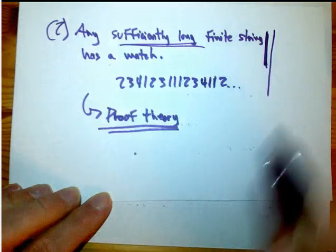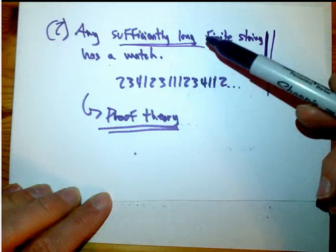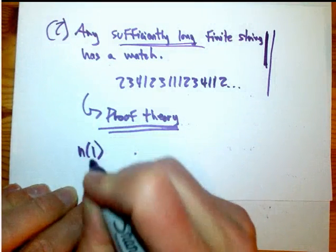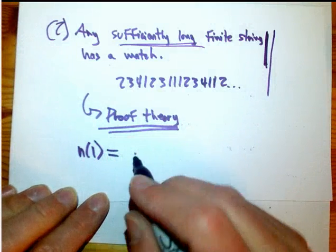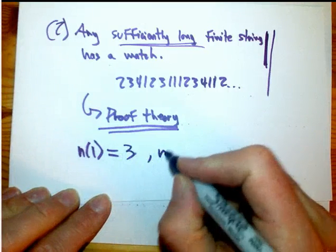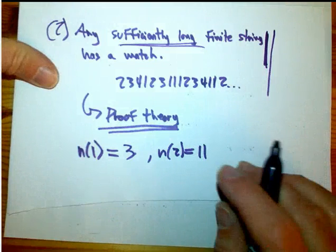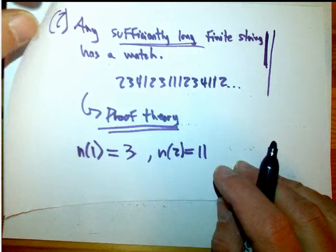So 'sufficiently long' is pretty vague. Can we make that more precise and make this an effective result — more specific about the numbers? We already know that N(1), the maximum length string you can build before being forced to have a match, is three. And N(2) is eleven. Friedman says that some gifted high school students were given the problem of thinking about N(1), N(2), and N(3), and they got N(2) equals eleven.